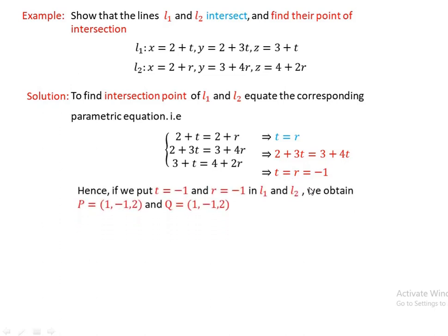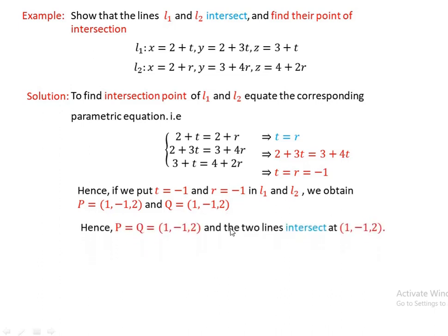So t and r are both equal to minus 1. Substituting t equals minus 1 into L1 and r equals minus 1 into L2, we obtain point P equals (1, minus 1, 2) and point Q equals (1, minus 1, 2). Since P equals Q, the two lines intersect at the point (1, minus 1, 2). Thanks for watching.